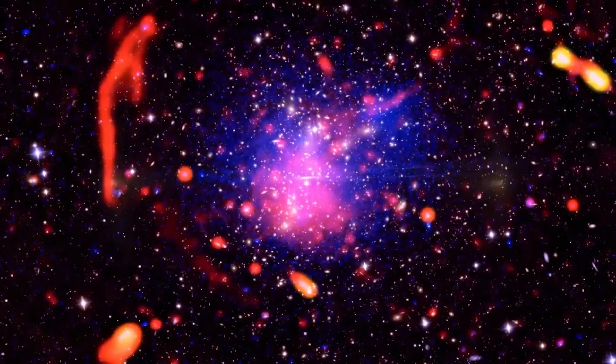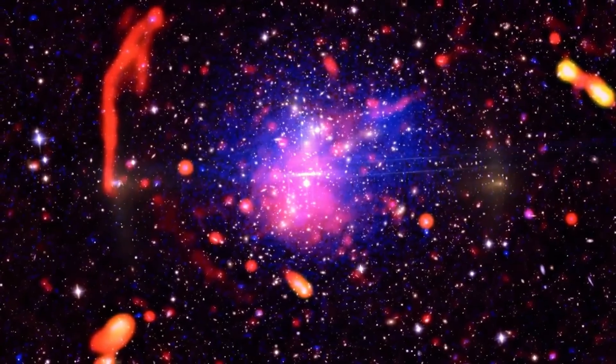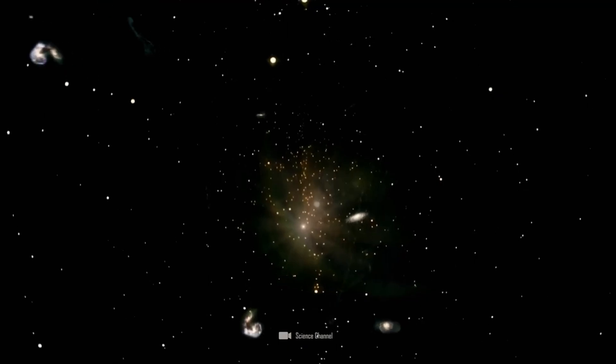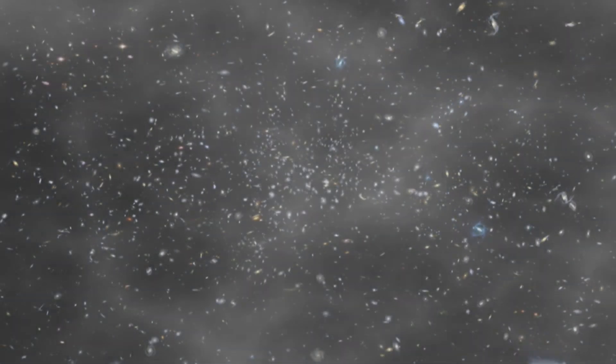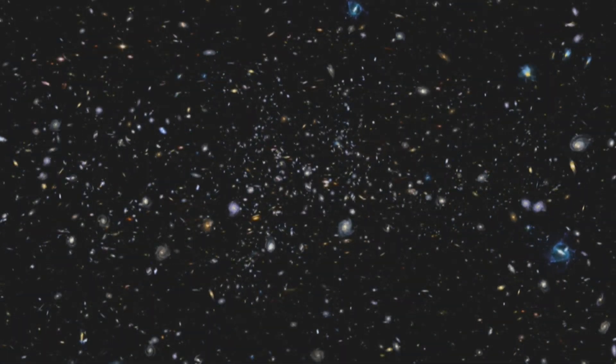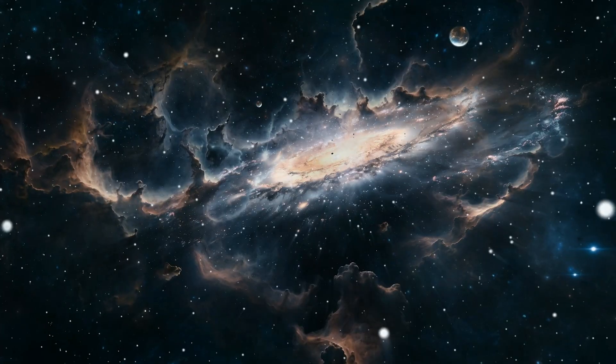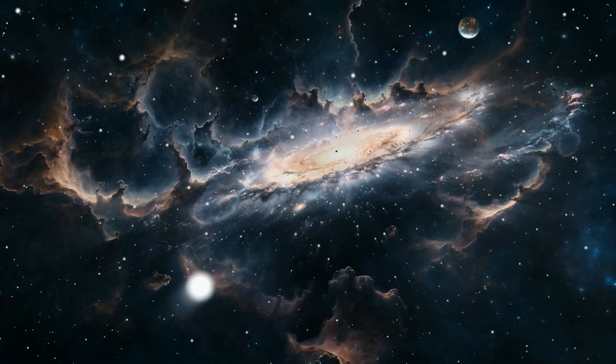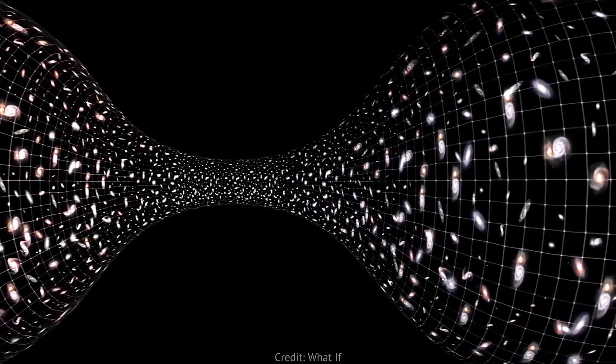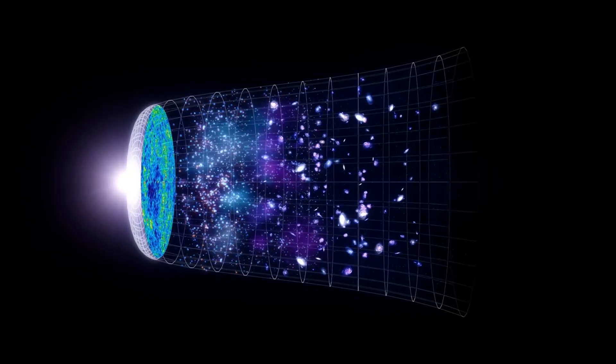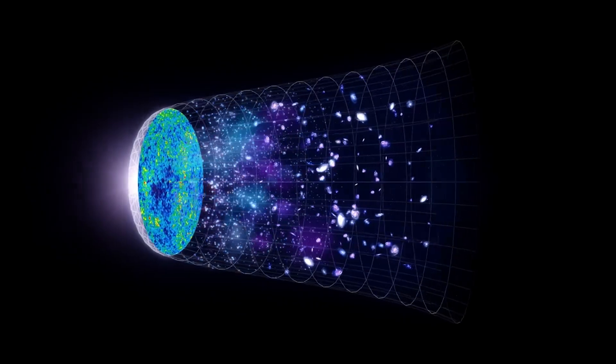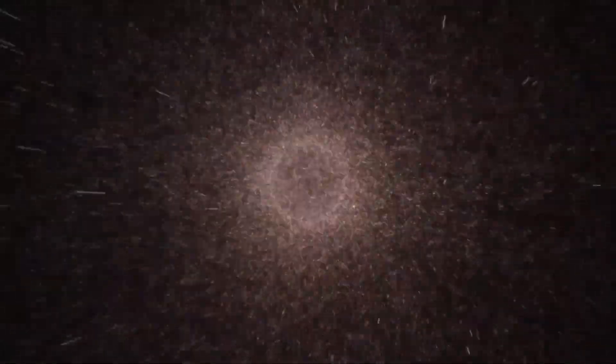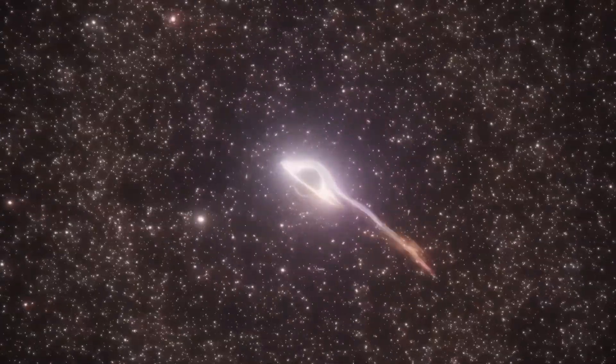In this view, our universe isn't unique. It's one bubble among countless others expanding within a grand cosmic sea. If that's true, then the edges of our universe aren't boundaries but membranes, thin regions where spacetime from one universe brushes against another. And when that happens, extraordinary things can occur. Energy might leak across, gravitational waves might ripple through, and under just the right conditions, light from one universe could seep into another.